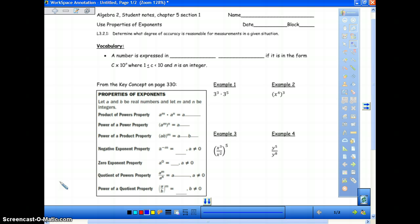That is where scientific notation comes in. That's not just with the properties of exponents that we have, but that's with the scientific notation. So the vocabulary that we're going to talk about today is a number is expressed in scientific notation if it is in the form of c times 10 to the n power. And notice this is really important right here where it says 1 is less than or equal to c, which is less than 10. That means that this number right here has to be between 1 and 10. Otherwise, it's not really in scientific notation.